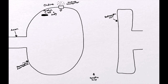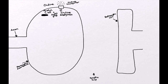Once choline is inside the cell, a couple of things happen. Through the pyruvate cycle within the mitochondria, acetyl coenzyme A is made. And through the enzyme acetylcholine acetyltransferase, we're able to add an acetyl group from the acetyl coenzyme A to the choline and make acetylcholine.